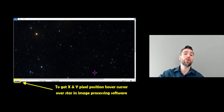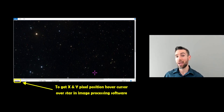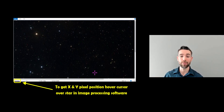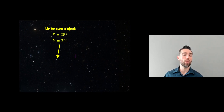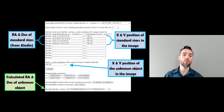To get the x/y pixel position of a star or your unknown object, you can use image processing software — it doesn't really matter what it is. Open your image, hover the cursor over the star, and it tells you the pixel position. At the bottom of the screen — this is on Paint — we've got a pixel position of 119 and 72, so the x position is 119 and the y position is 72. That's quite straightforward. You need the actual center point of the star to get that accurately.